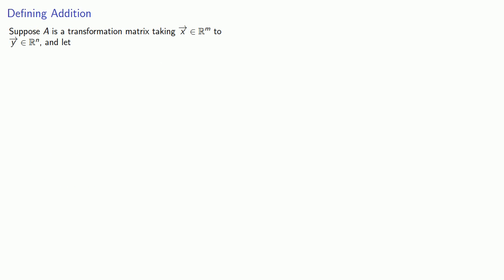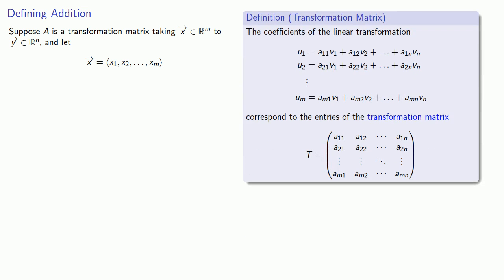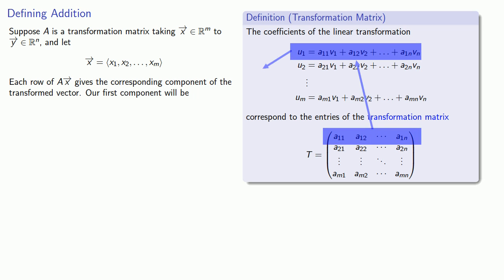So suppose A is a transformation matrix that takes vectors in R^m to vectors in R^n. And we'll let our vector X have m components, X1 through Xm. And remember our transformation matrix gives us the coefficients of the linear formulas that give us the components of our vector Y. So each row of AX gives the corresponding component of the transformed vector. Our first component is going to be given by the formula, and similarly for the other components.